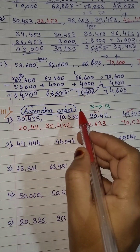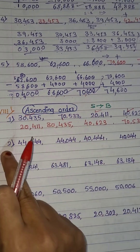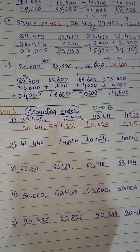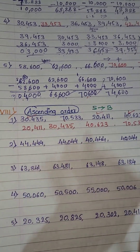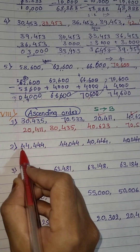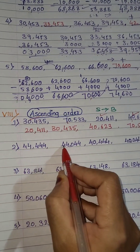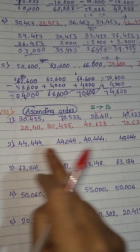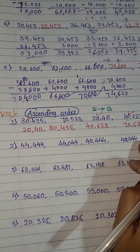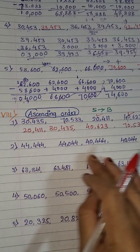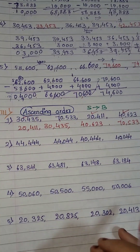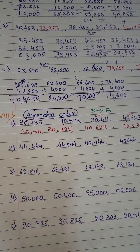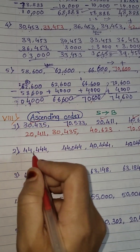You have to go from small to big. Which is the smallest number here? First we have to see the number in the highest place, that is the 10,000 place. Here it is 4, here 4, here 4, here 4 — all are 4. So we are not able to see which is the smallest or highest number.